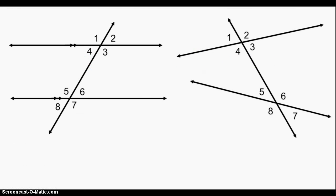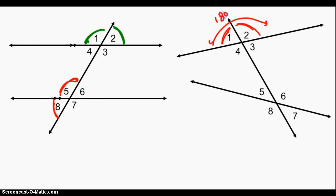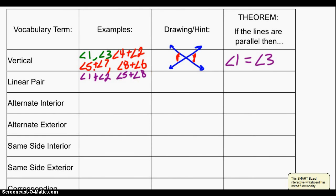We also know about a linear pair. A linear pair are any two angles that are adjacent to each other on the same intersection that add up to 180 degrees. So for example, angle one and angle two are a linear pair. Or you could say that angle five and angle eight are a linear pair — it works even if the lines aren't parallel. They add up to 180 degrees; they're supplementary. So let's write down our examples: angle one and angle two, and angle five and angle eight are a linear pair.